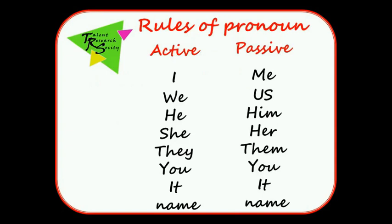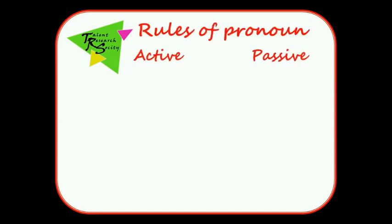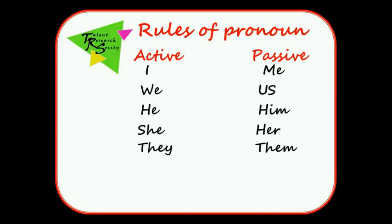Rules of pronoun in active-passive: I → ME, WE → US, HE → HIM, SHE → HER, THEY → THEM, YOU → YOU, IT → IT, NAME → NAME.